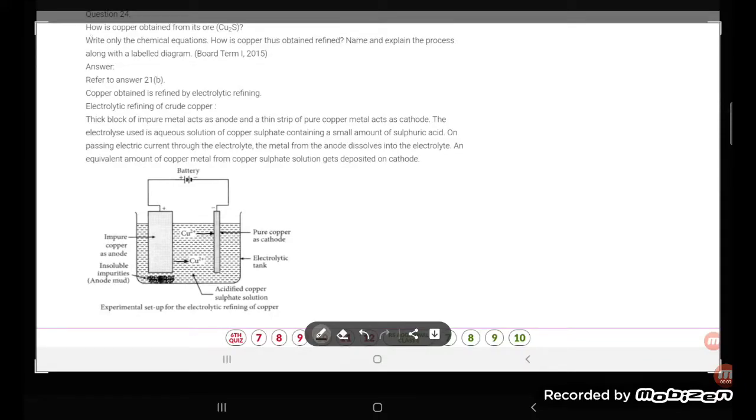Hi students, let's try to understand one more question. The question is: How is copper obtained from its ore Cu2S? Write only the chemical equation. How is copper thus obtained refined? Name and explain the process along with a labeled diagram.